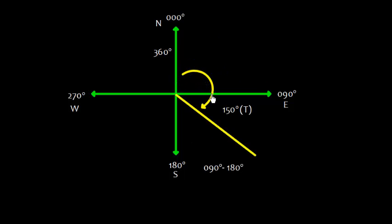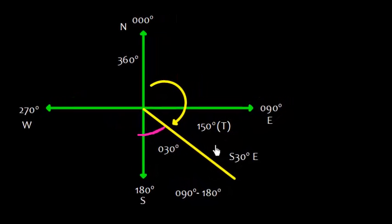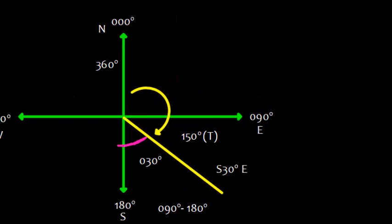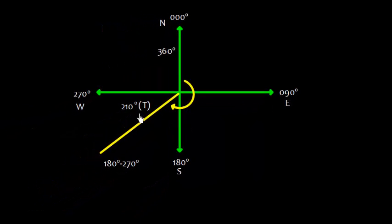Now suppose the course is 150° true, meaning it falls between 090° and 180° — the southeast quadrant. If the total is 150°, then the angle from south is 30 degrees, because 180 minus 150 equals 30. So this can be represented as S30°E.